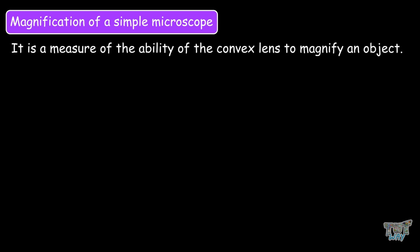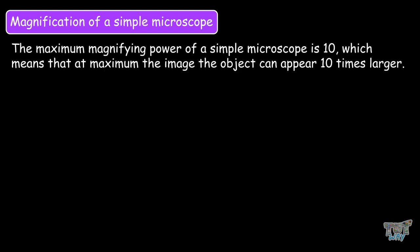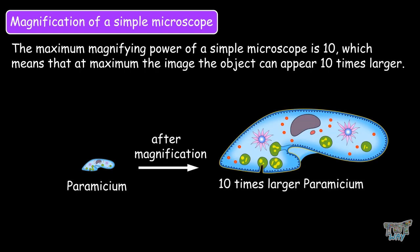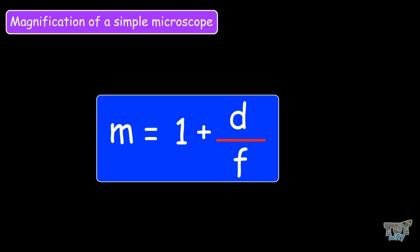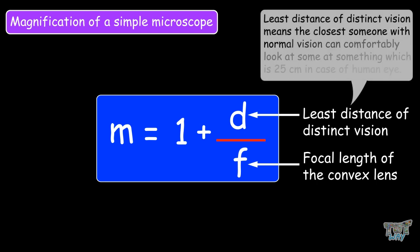Now let's learn what is magnification of a simple microscope. Magnification is to measure the ability of the convex lens to magnify an object. Or, we can say that magnification is the value that tells us how much larger an image is when compared to the original object. The maximum magnifying power of a simple microscope is 10, which means that at maximum the image of the object can appear 10 times larger. The formula for finding the magnification of a simple microscope is M equals 1 plus D over F, where D is the least distance of distinct vision and F is the focal length of the convex lens. And the meaning of the least distance of distinct vision means the closest someone with normal vision can comfortably look at something, which is about 25 centimeters in the case of the human eye.